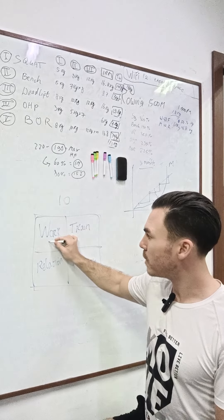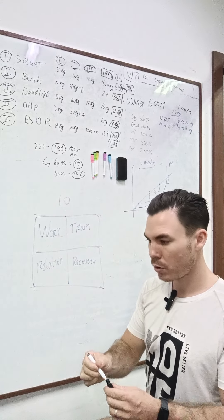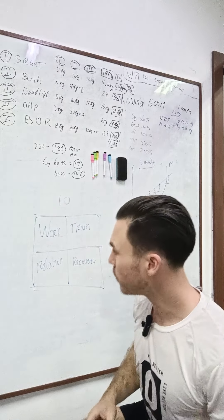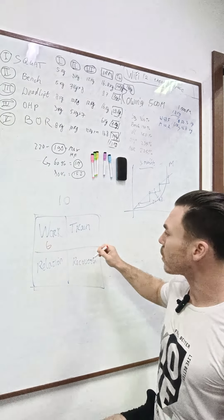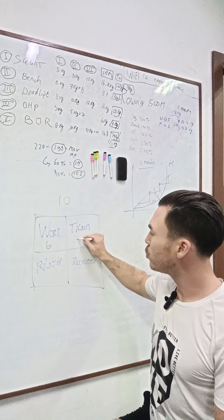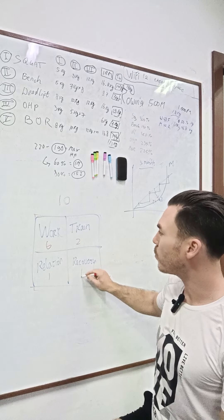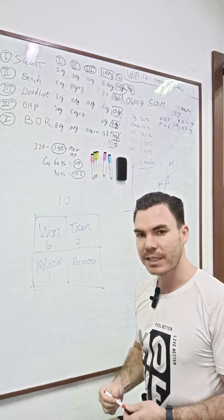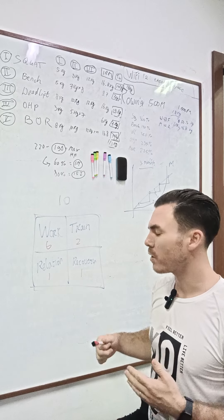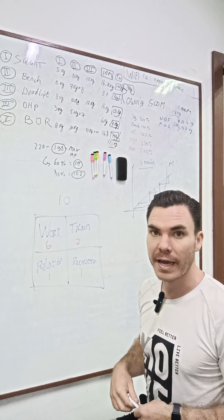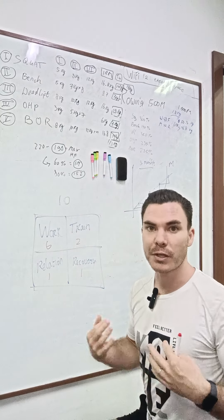To give you an idea, you might be six on work, two in training, one in relationships, and one in recovery. If that is the case, you look at that and wonder: why don't I have energy, why don't I have a good mood?